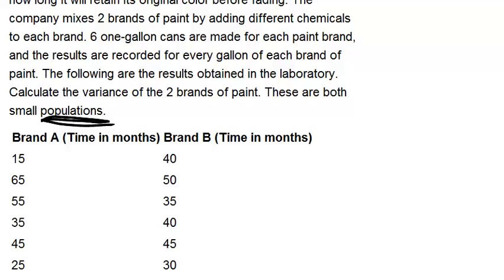Now remember, to calculate the variance, you need to know three things. You need to know the values for x, which are all of your data points, which we do. The values for x are 15, 65, 55, and so on for brand A and then for brand B. We also need to know mu, which is the mean for all of our values. So we'll need to calculate that. And we need to know n, which is the number of data points we have. In each case, n equals 6.